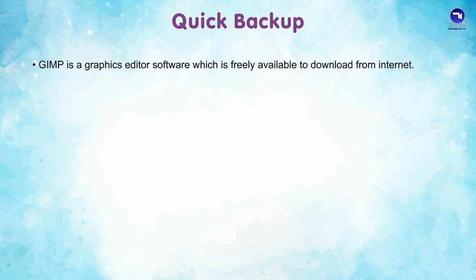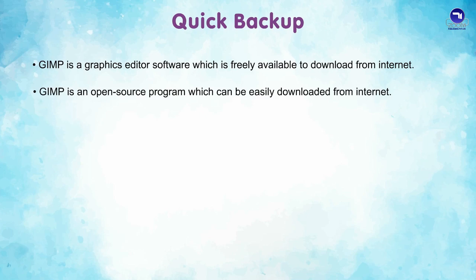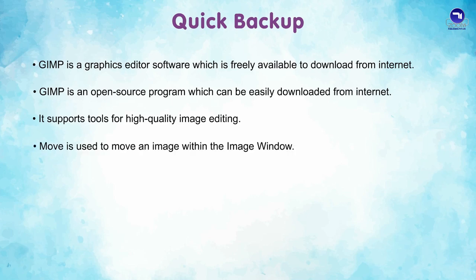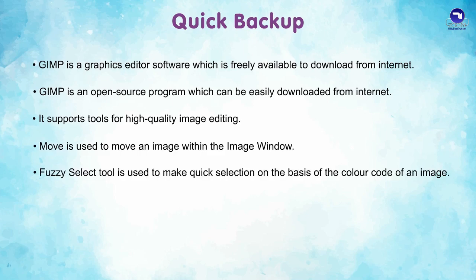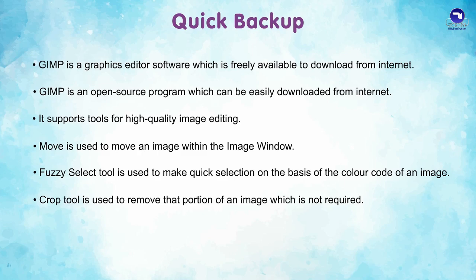Quick recap: GIMP is a graphics editor software which is freely available to download from the internet. It is an open source program that supports tools for high quality image editing. Move tool is used to move an image within the image window. Fuzzy select tool is used to make quick selection on the basis of the color code of an image. Crop tool is used to remove the portion of an image which is not required. Warp tool is used to move pixels from one point to another.